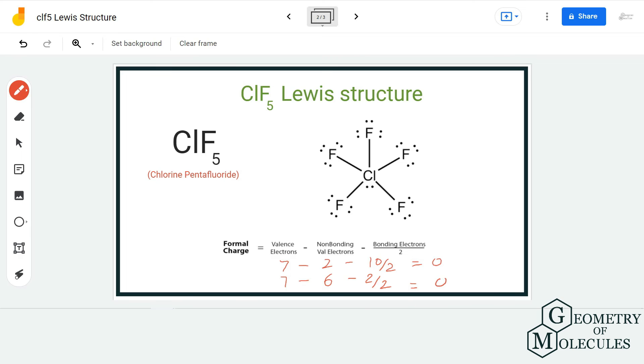As all the atoms in this Lewis structure have complete octets and the formal charges are zero, this is the relevant Lewis structure for ClF5.